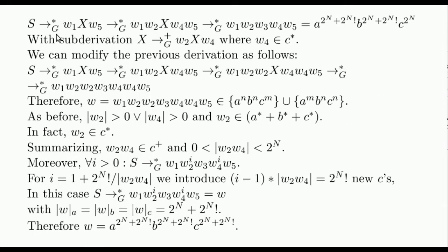Therefore, there exists a path where a variable is repeated. We make it explicit in this way. This path also belongs to the original tree. It follows that there exists a derivation of this form, with this subderivation where w4 can only be composed of c's, since it lies to the right of our specially chosen path.